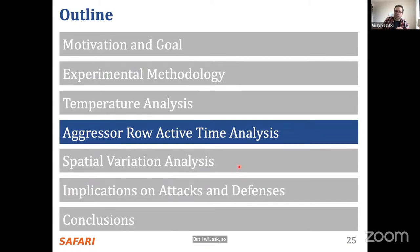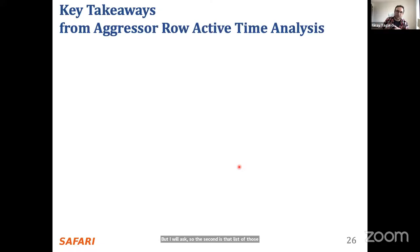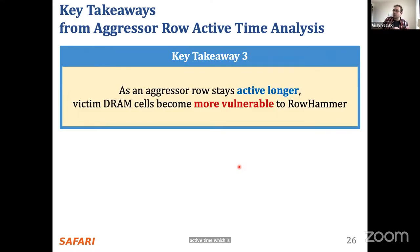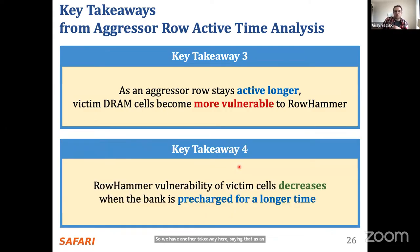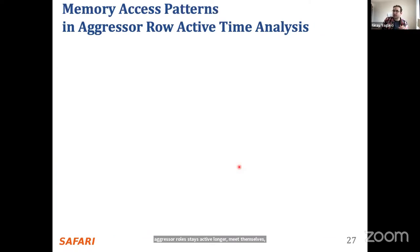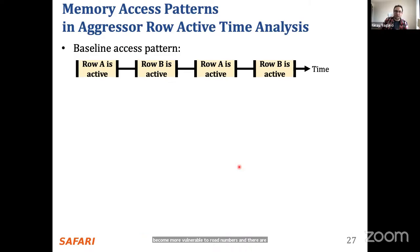Another takeaway here: as an aggressive row stays active longer, victim DRAM cells become more vulnerable to row hammer. And the row hammer vulnerability of a victim cell decreases when the bank is pre-charged for a longer time. Let me explain the methodology. To induce row hammer bit flips, we keep accessing a DRAM row very frequently, but here we are sweeping the timing parameters — specifically the time delay between an activation, a pre-charge, and the next activation.